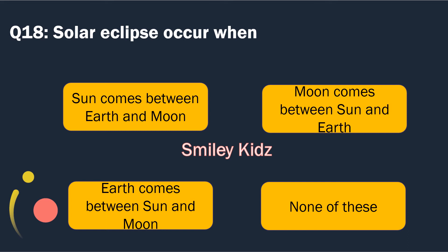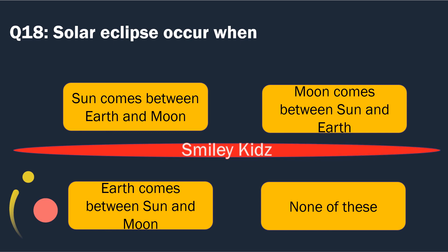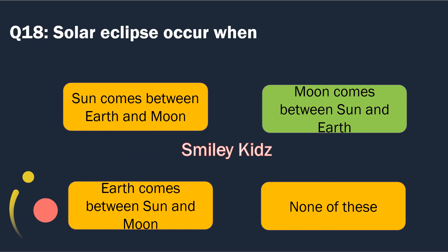Question number 18. Solar eclipse occurs when. Options are: Sun comes between Earth and Moon; Moon comes between Sun and Earth; Earth comes between Sun and Moon. The right answer is Moon comes between Sun and Earth. Solar eclipse occurs when Moon comes between Sun and Earth.